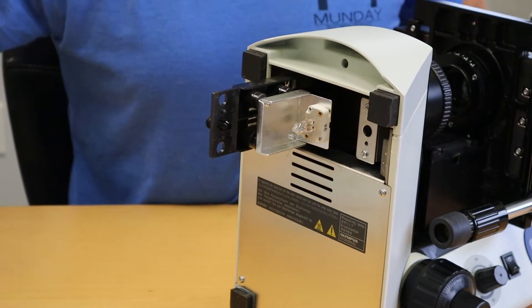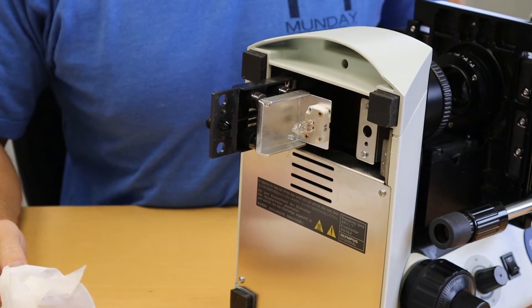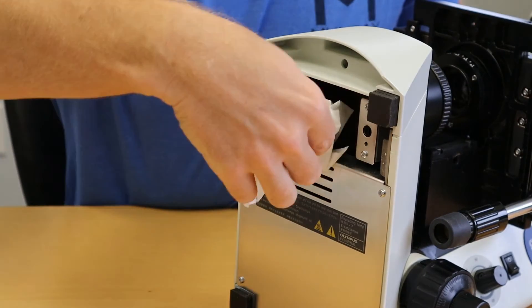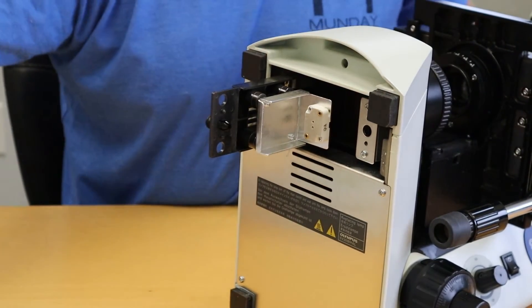You want to make sure the bulb is good and cool. If it went out while you're working on the scope, you might want to let it cool for about five minutes because they are very hot. Take some chem wipes, remove the old bulb and dispose of it.